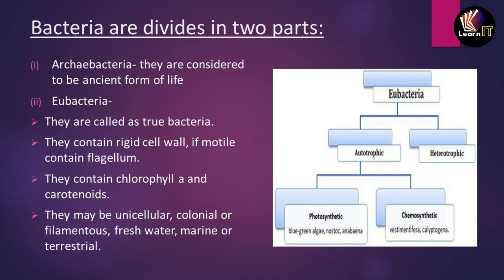Because some eubacteria contain chlorophyll A and carotenoids, they can prepare their own food through the autotrophic mode of nutrition — photosynthesis. They can be unicellular, live in a colony, or have a filamentous structure, and can live in freshwater, marine, salty water, or terrestrial areas. Eubacteria are divided into autotrophic (photosynthetic or chemosynthetic) and heterotrophic types.